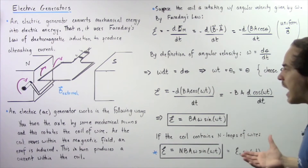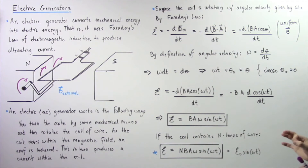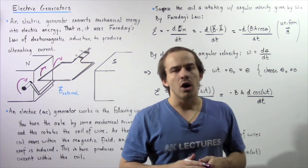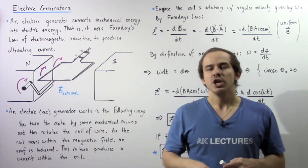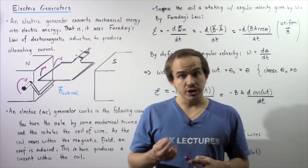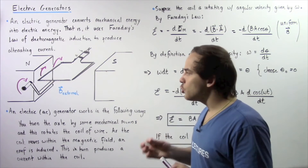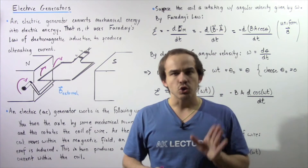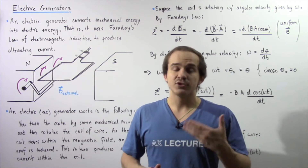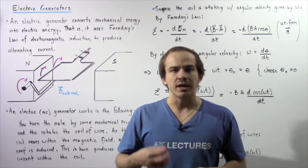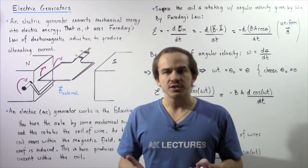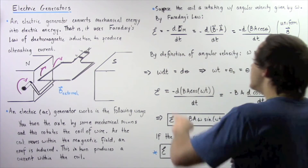Now let's use Faraday's Law of Electromagnetic Induction to show that the induced EMF varies sinusoidally, and that this creates a sinusoidal electric current — that is, an alternating electric current.